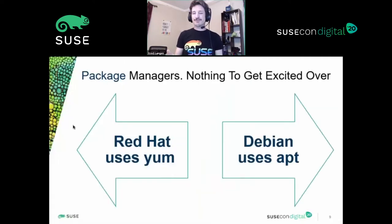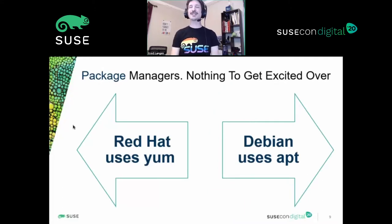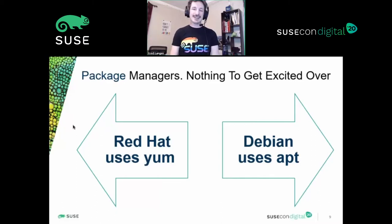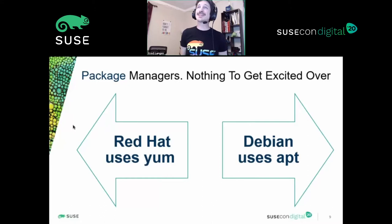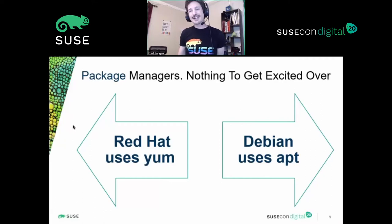Let's talk about differences and some of the tools. The first thing I want to talk about is package managers. In the past, package managers have been nothing really to get excited about. I've used Red Hat's Yum and Debian's apt, and they have about even numbers of features I like and dislike. I learned to use whatever was at hand. Yum's been recently replaced with DNF, and I haven't used DNF so I'm not really going to talk too much about it.